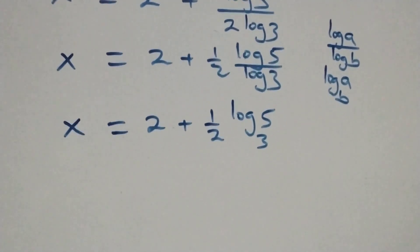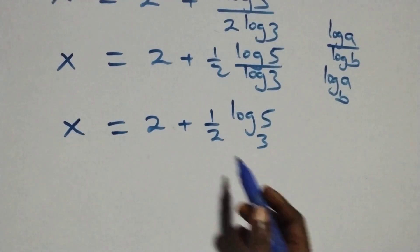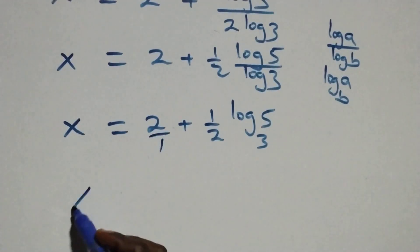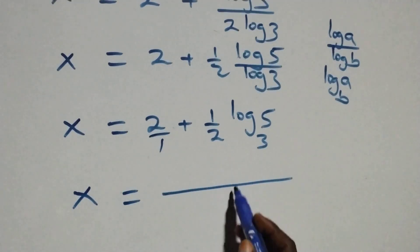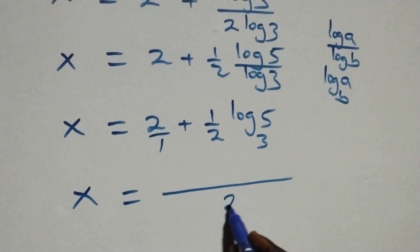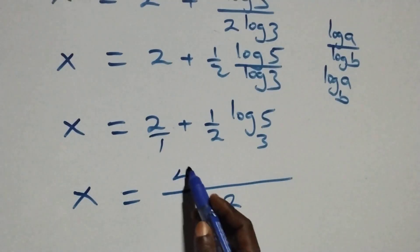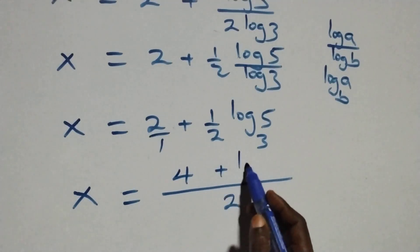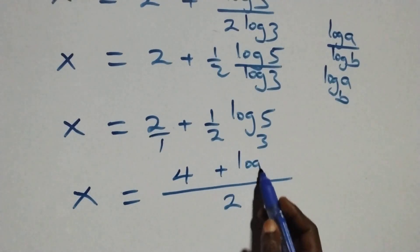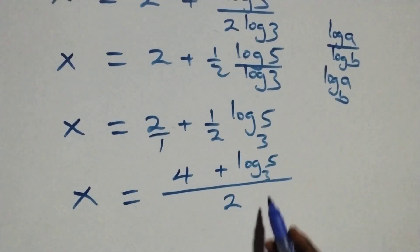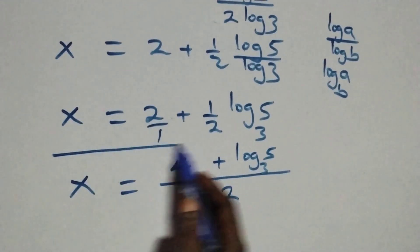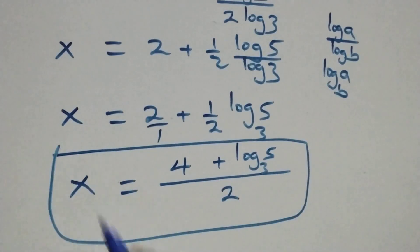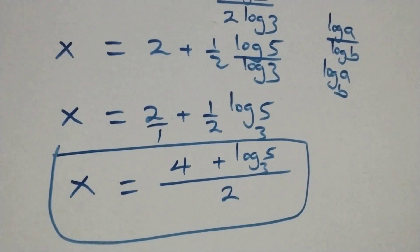Then we bring this together as one fraction. 2 over 1 gives us a common denominator of 2, so x equals 4 plus log 5 base 3, all over 2.